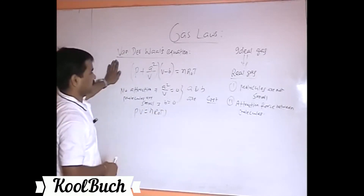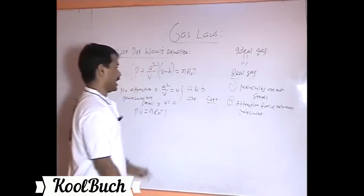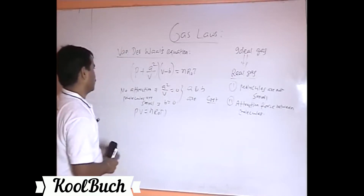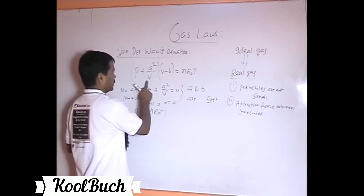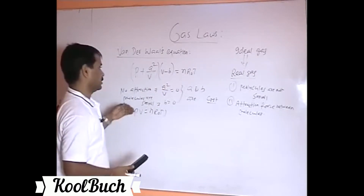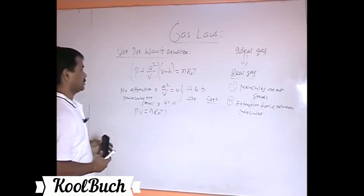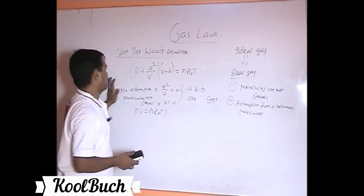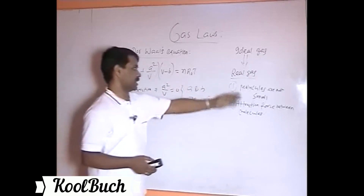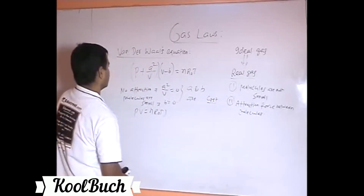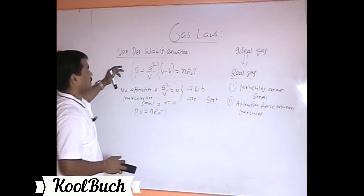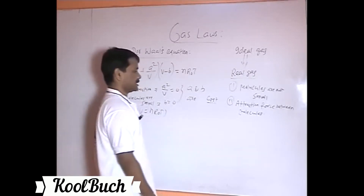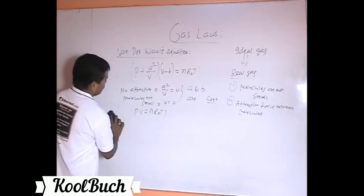So the Van der Waals equation accounts for the size of the molecule as well as the attraction force between molecules. The additional pressure term and the reduced volume term reflect these real-gas effects. With this, we complete the gas laws for both ideal and real gases. Now let's move a little further into thermodynamic processes.